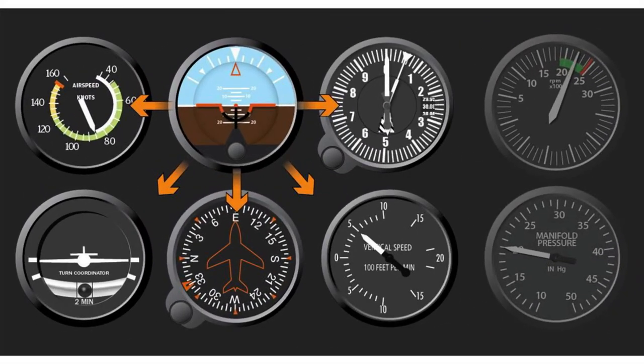During pre-flight, ensure that the inclinometer is full of fluid and has no air bubbles. The ball should also be resting at its lowest point. When taxiing, the turn coordinator should indicate a turn in the correct direction while the ball moves opposite the direction of the turn.